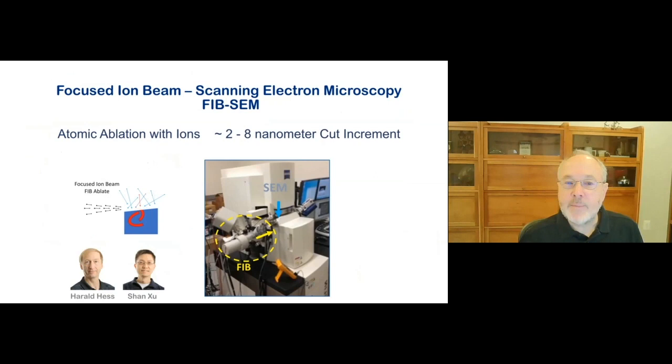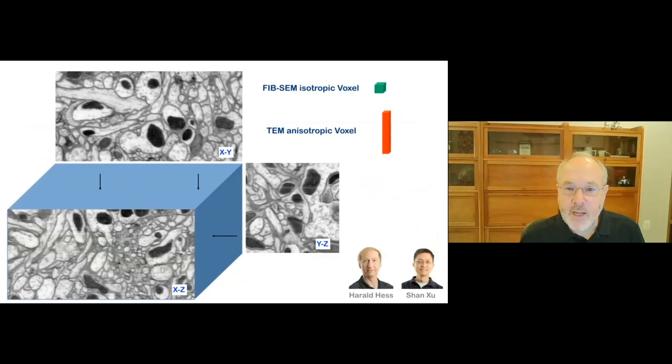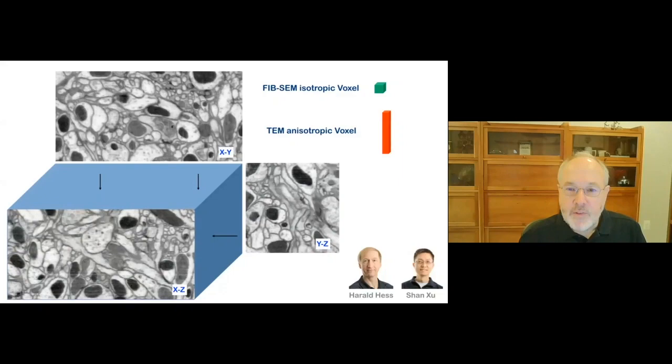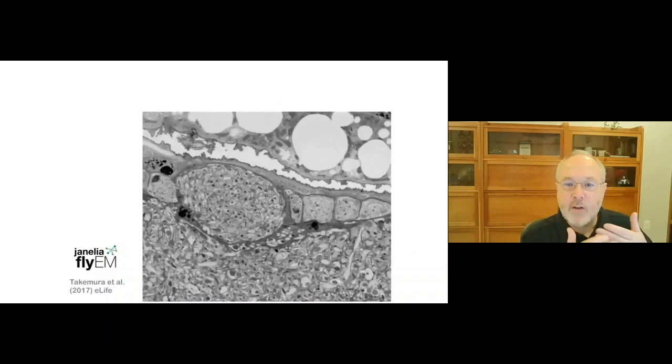The first task was collecting the image data. Harold Hess and Chun Soo adapted the FIB-EM microscope, normally a tool for metallurgy, to biology, which is a tour de force of applied physics and instrumentation. Sample preparation was continuously improved over several years by Zhiyuan. FIB-EM allows you to image with isotropic voxels, that is, voxels that have the same dimension in each of the three dimensions. This is a great help with image processing.